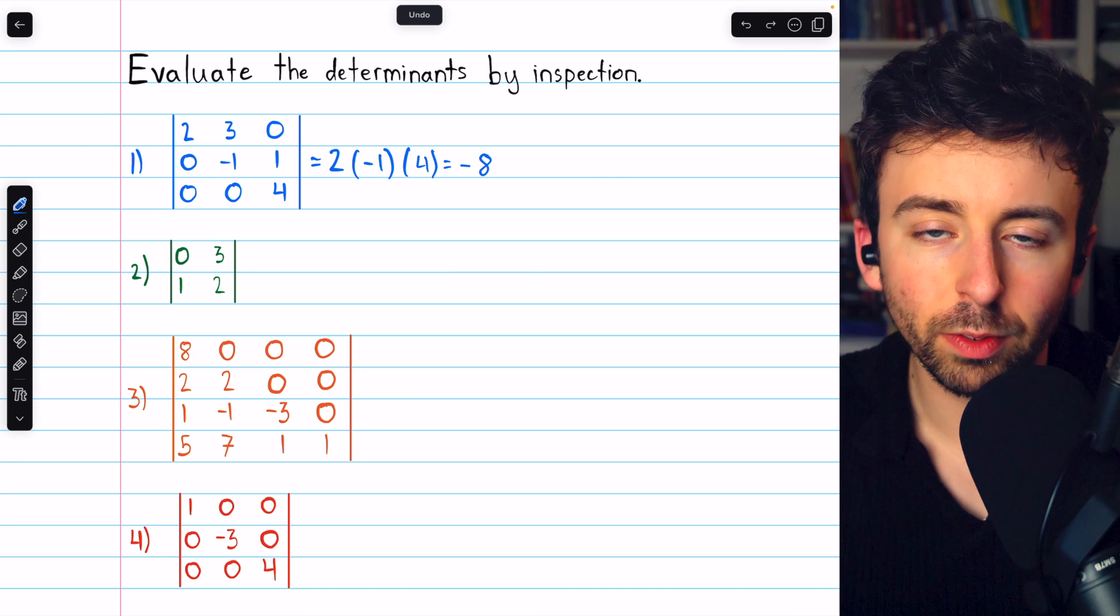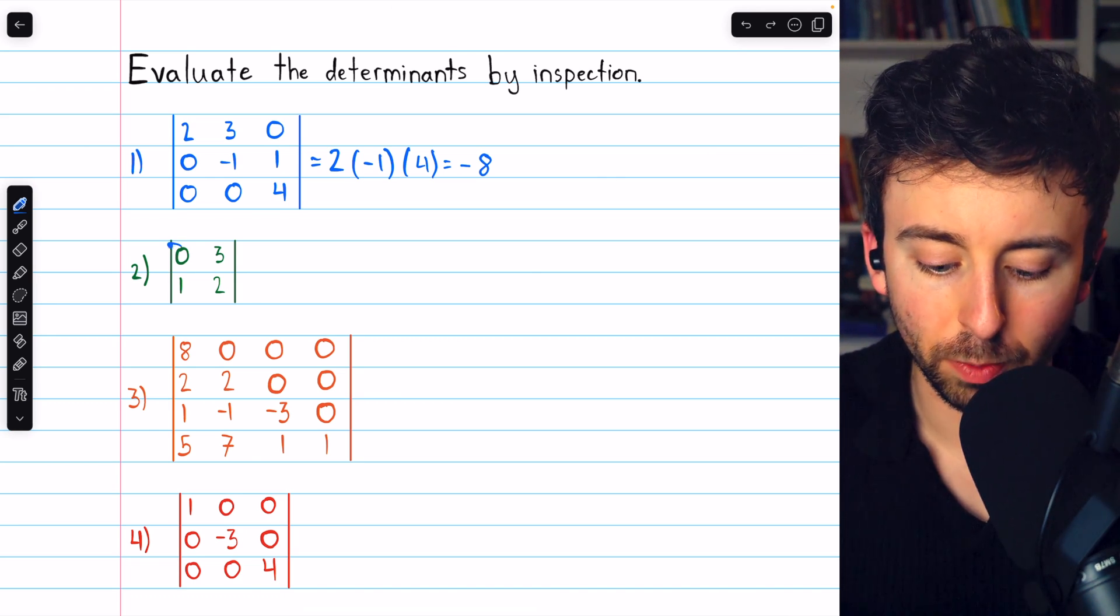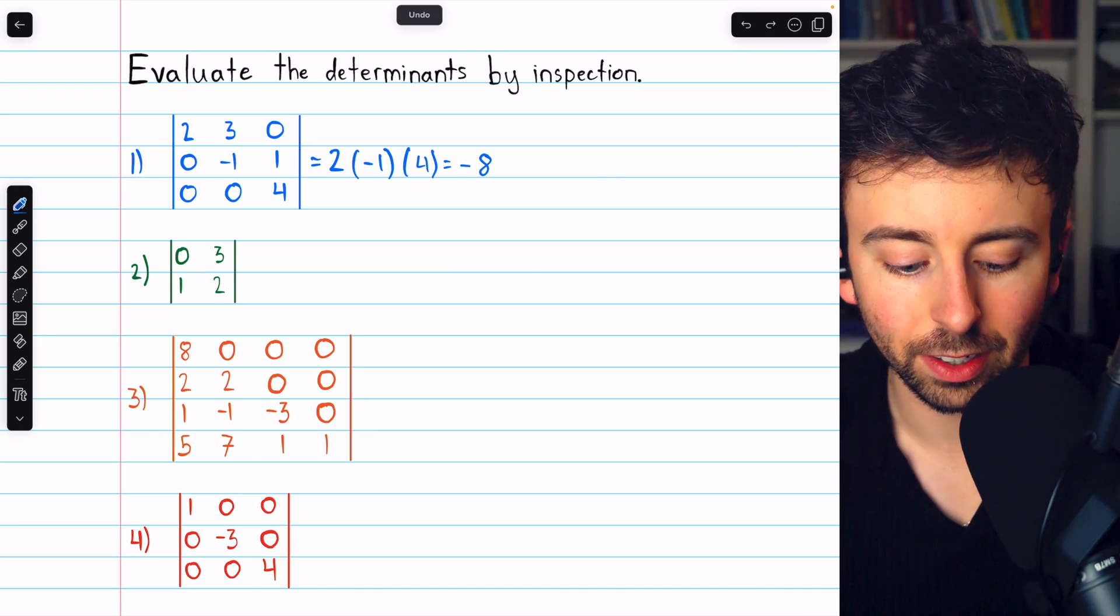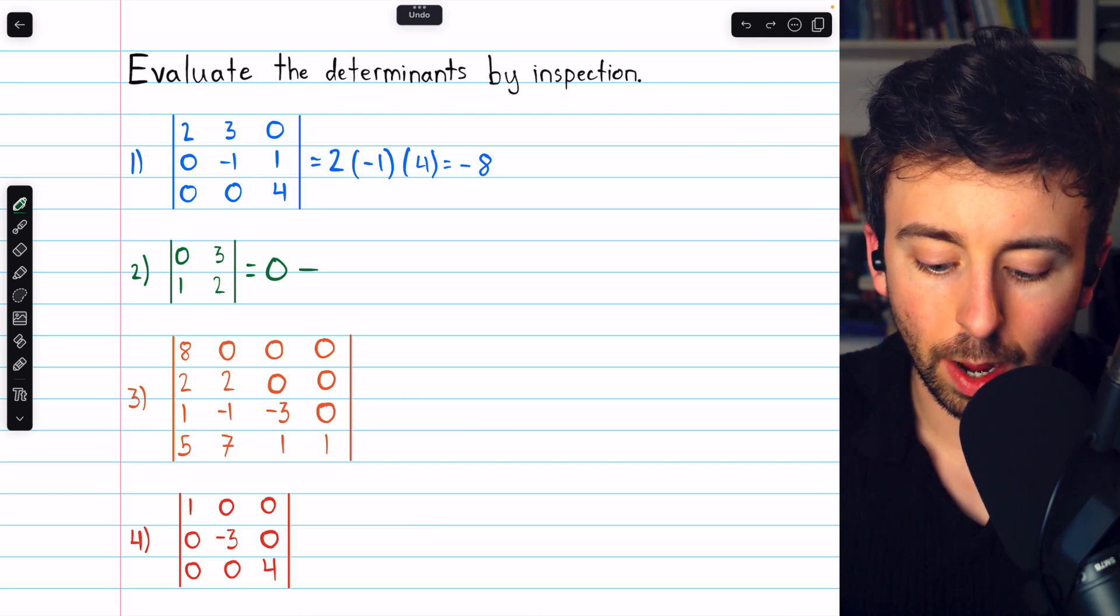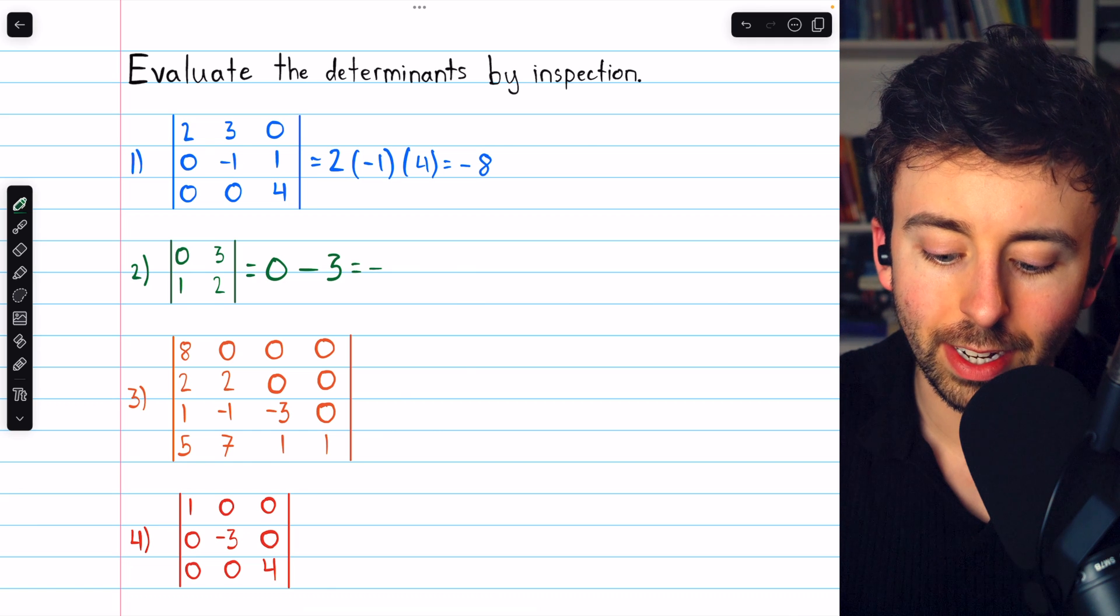For a 2x2 matrix, we can find the determinant by just subtracting the products of the diagonals. 0 times 2, of course, is 0, and then we subtract 3 times 1, so the determinant is negative 3.